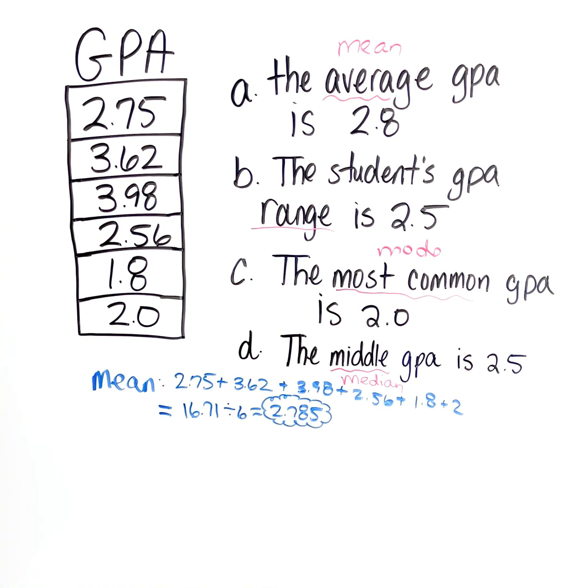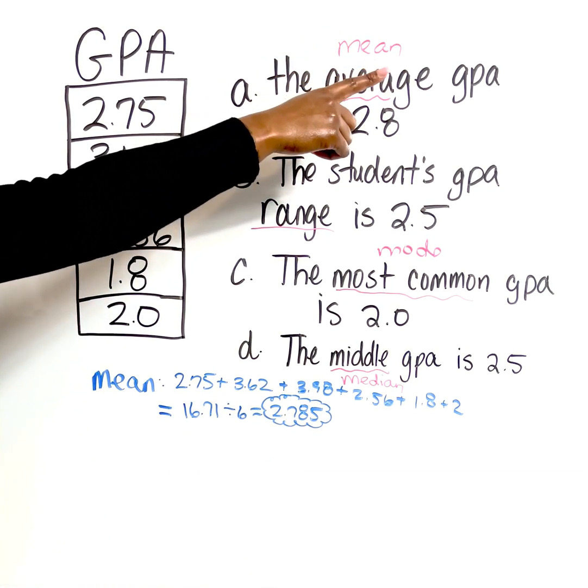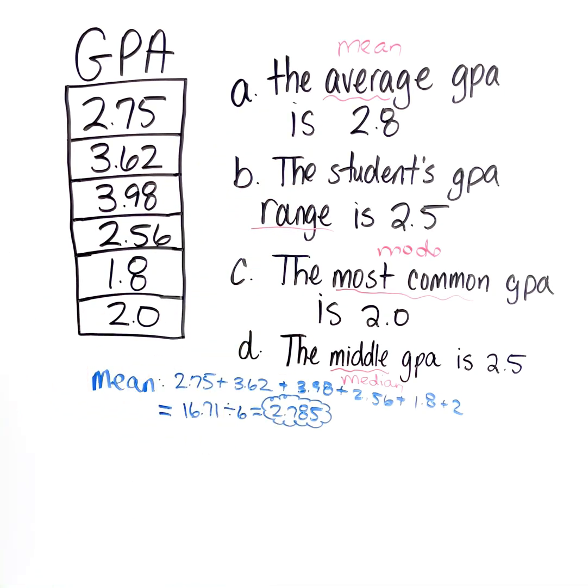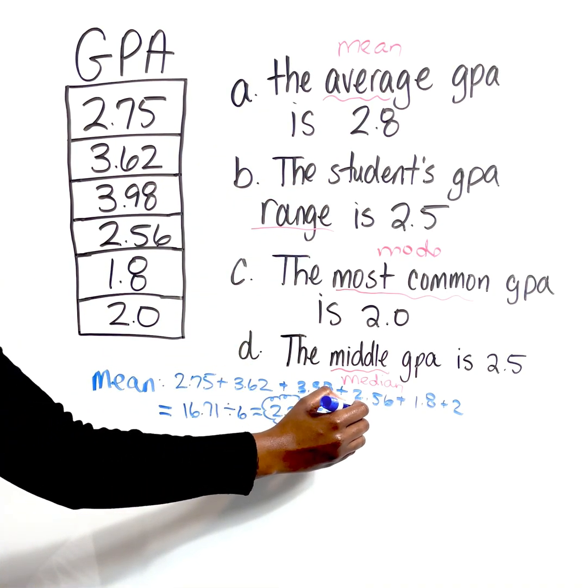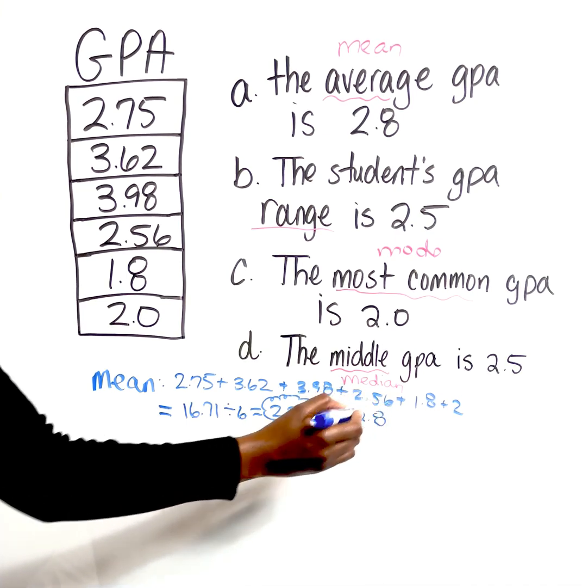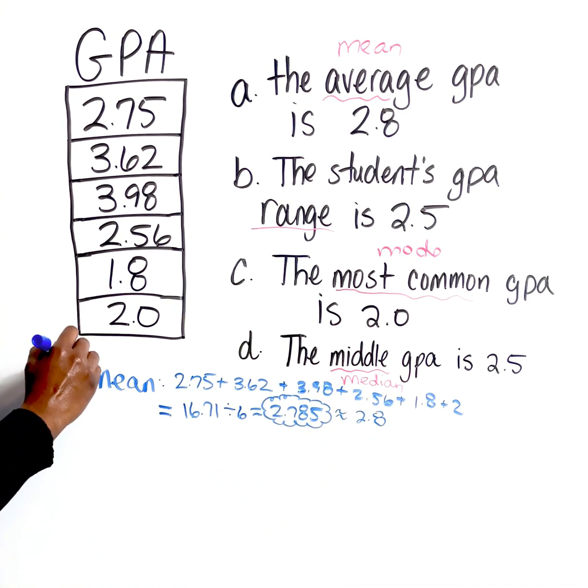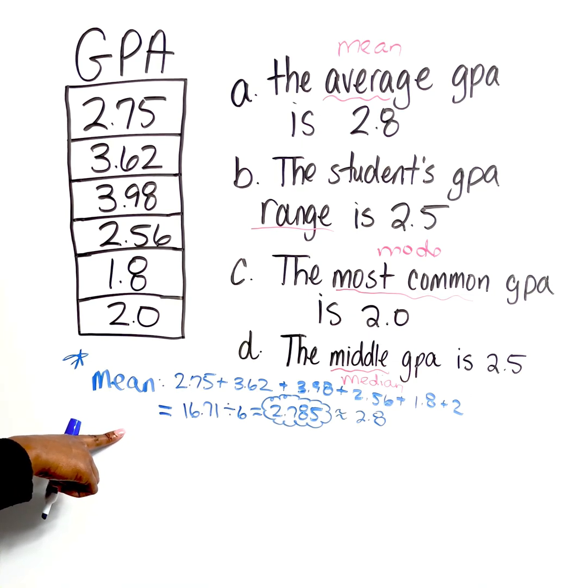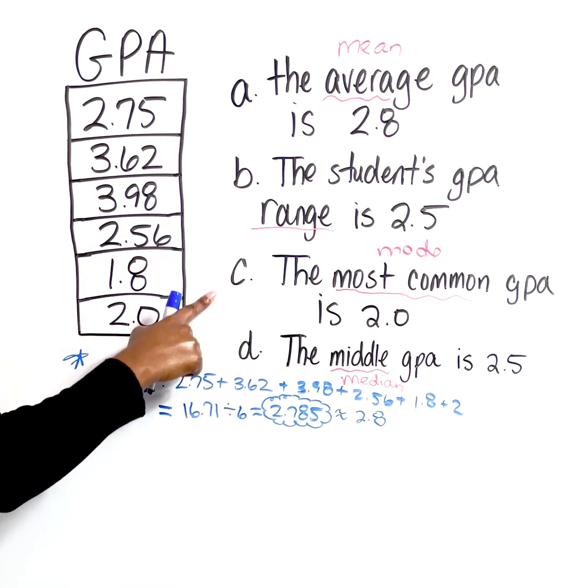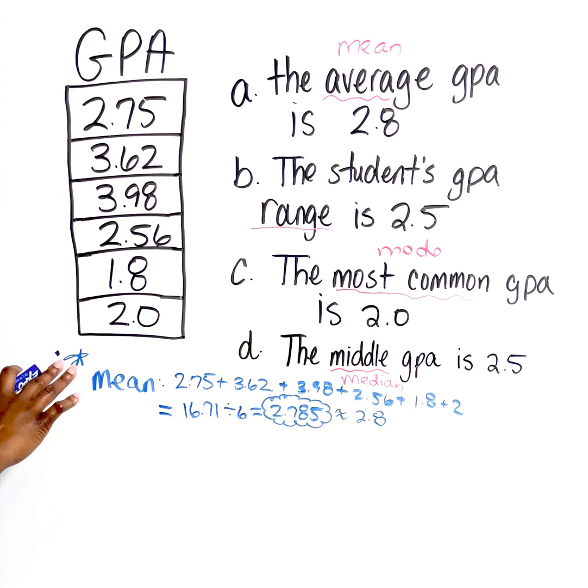Now this says the average of the mean GPA is 2.8. We have 2.785. If we rounded that to the nearest tenth, that will give us about 2.8. So we're going to keep this one in mind because this is looking like it's the correct answer, but we still want to eliminate everything else to make sure we're on the right path.